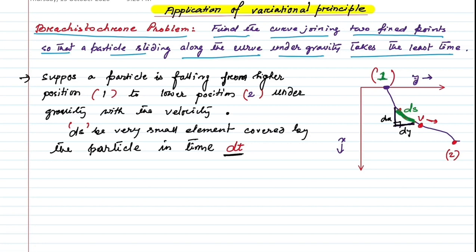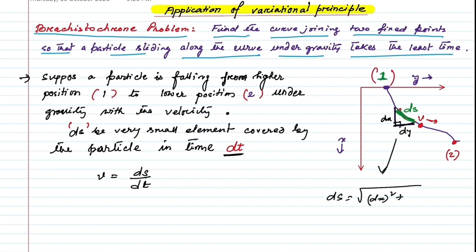The velocity V equals DS/DT. From the small right triangle, we can find DS = √(dx² + dy²). Taking dx² common, we get DS = √(1 + (dy/dx)²) · dx, and since the square root of dx² is dx, we obtain this expression.